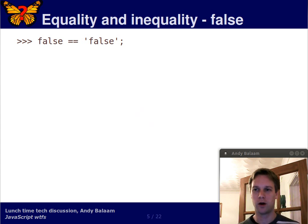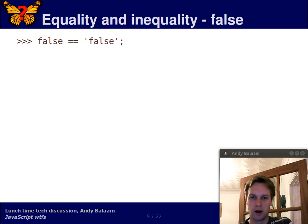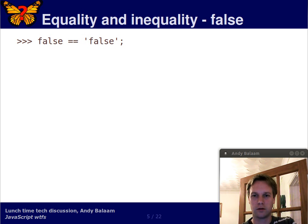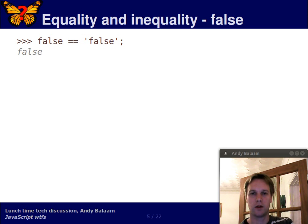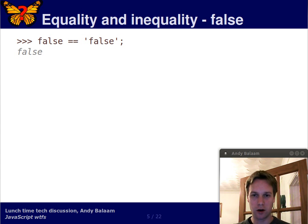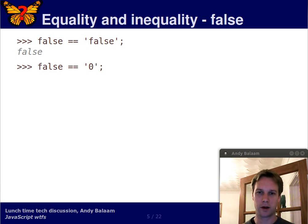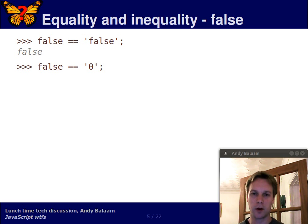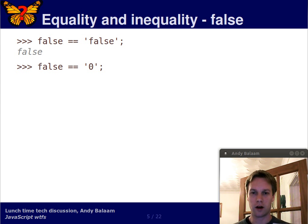So, equality and inequality. Here we've got a question that we're asking to the Firebug interpreter: is the boolean value false equal to the string 'false'? JavaScript has two different ways of asking whether things are equal — a double equal operator and a triple equal operator. Most of the WTFs are around the double equal operator. The takeaway rule, if you can't be bothered to watch this video, is use the triple equal operator. Always, every time.